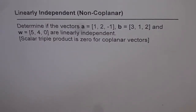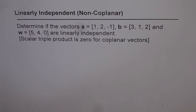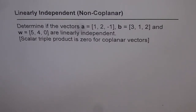Linearly independent, or non-coplanar — these are very important terms which we often use. Linearly independent vectors are those vectors which are not in the same plane. When vectors are linearly dependent, you can write one in terms of the other two as a linear combination. If you can't write one as a linear combination of the other two, then they are non-coplanar and they are linearly independent. That is the definition.